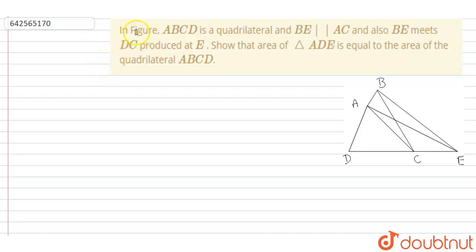The question says: In figure, ABCD is a quadrilateral and BE parallel to AC and also BE meets DC produced at E, such that area of triangle ADE is equal to the area of the quadrilateral ABCD.